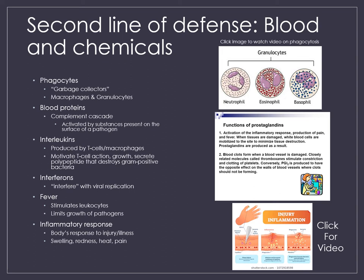Interleukins are typically produced by T cells and macrophages — these white blood cells serve as chemical communication that alerts other immune system cells that there is danger and they need to attack. Interferons are proteins produced when white blood cells, T lymphocytes, and fibroblasts become infected. They are called interferons because they interfere with replication within infected cells, specifically when talking about viruses.